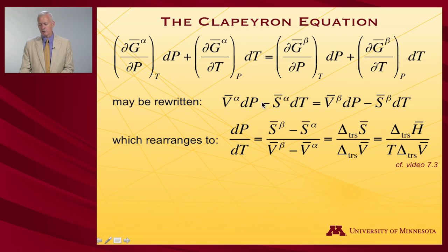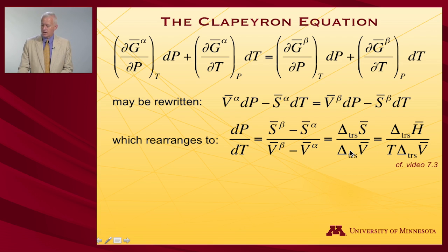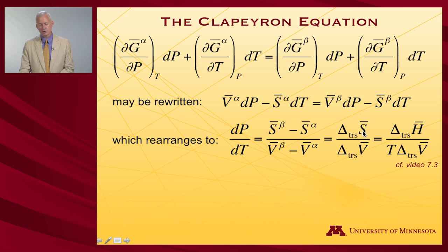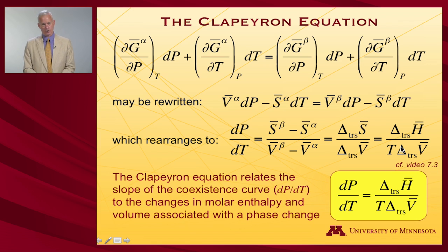Rearranging by collecting terms in pressure and temperature, we get dP/dT equal to the difference in molar entropies between the two phases divided by the difference in molar volumes — that is, the transition molar entropy divided by the transition molar volume. Recalling from video 7.3 that the transition entropy equals the transition enthalpy divided by temperature, and since transition enthalpy is much easier to measure experimentally, we substitute to obtain the final form.